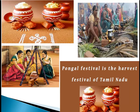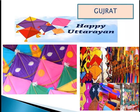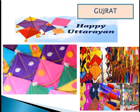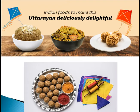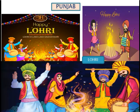In Gujarat, Makar Sankranti is also known as Uttarayan and is celebrated for two days — the first day is Uttarayan and the next is Vasi Uttarayan. Gujarati people celebrate by flying kites and having delicious dishes made with peanuts and jaggery. In Andhra Pradesh, Makar Sankranti is celebrated for three days: the first day is Bhogi Punugu, the second is Peda Punugu, and the third is Kanuma.